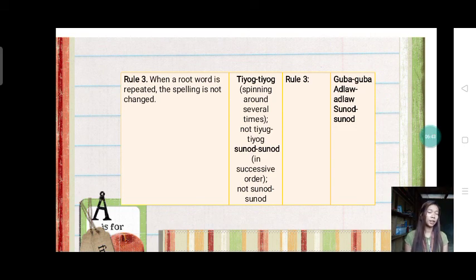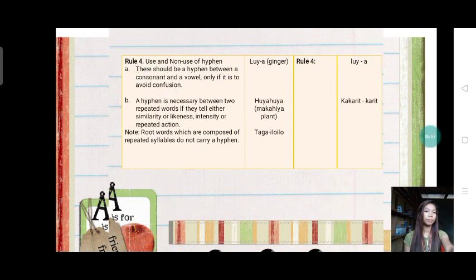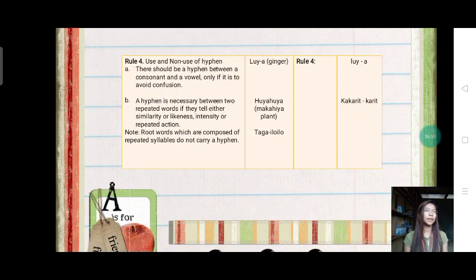Our example here is guba-guba, adlaw-adlaw, sunod-sunod. The first syllable and the second syllable, magparehas la. Pero di rin gimbabagoan ang spelling. Okay, once the valuean ng spelling, iba na it meaning.